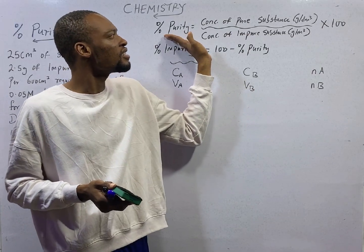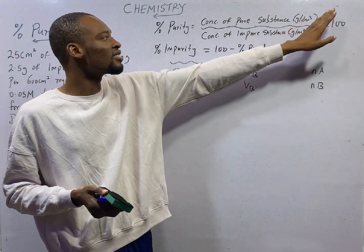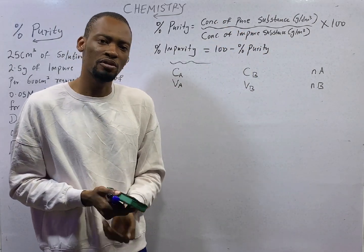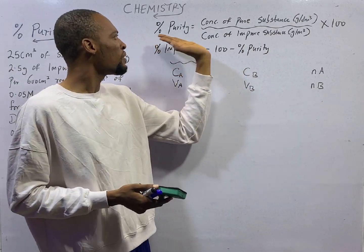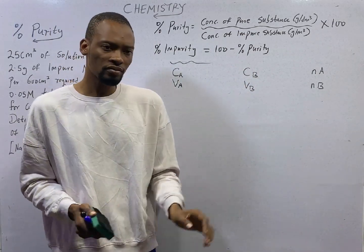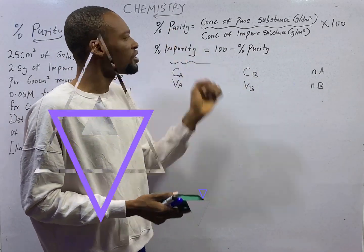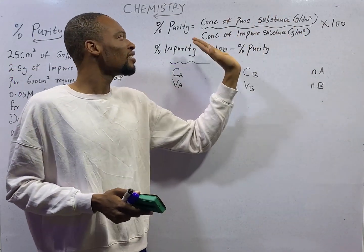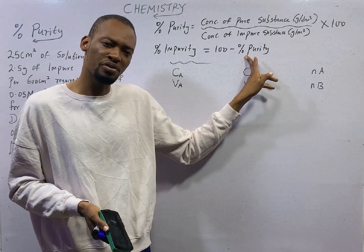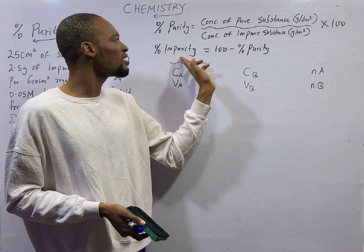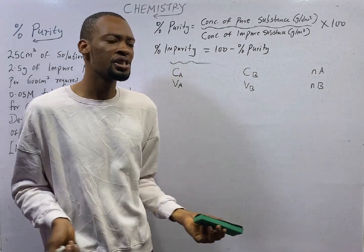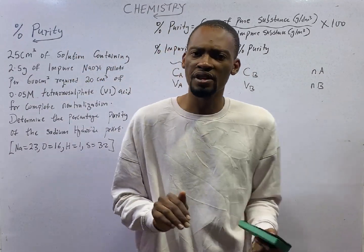Back to the topic, percentage purity. Percentage purity is simply concentration of pure substance in grams per dm³ over concentration of impure substance in grams per dm³ times 100. In terms of mass, percentage purity is mass of pure substance over mass of impure substance times 100. If you are asked to look for percentage impurity, percentage impurity will simply be 100 minus percentage purity.